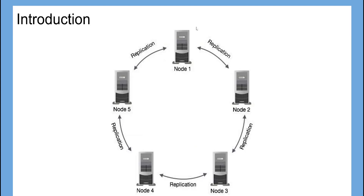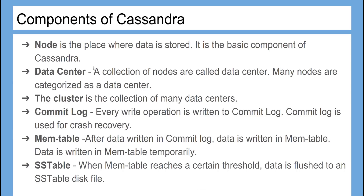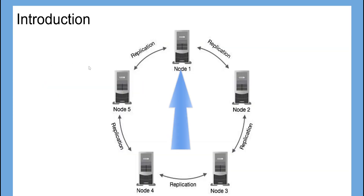Here is a Cassandra architecture model. Let's see the components of Cassandra in detail. A node is the place where data is stored — it is the basic component of Cassandra.